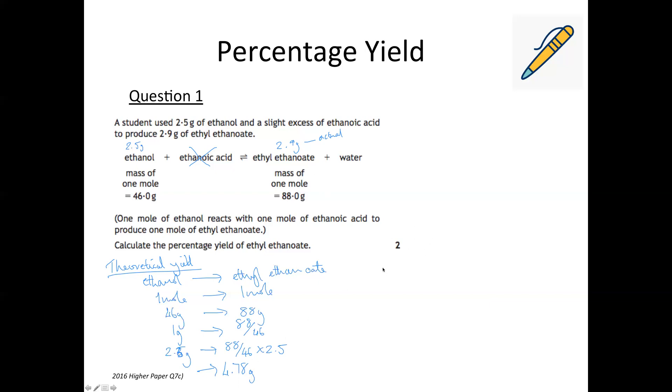So now we've got that and our actual yield we can use the percentage yield equation. The percentage yield is actual over theoretical times by 100. So the actual is 2.9, the theoretical we worked out to be 4.78, and we're timesing that by 100 to turn it into a percentage. So if you put that into your calculator that comes out as 60.67% to two decimal places. Okay that's the first example.